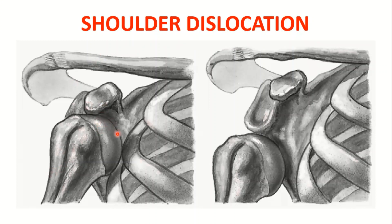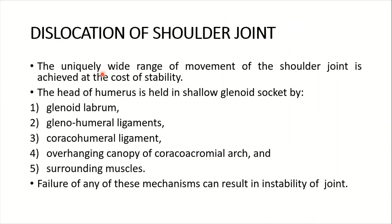Here you can see the shoulder joint in a dislocated position — this is the glenoid fossa or glenoid cavity, and this is the dislocated head of the humerus going inferiorly. The uniquely wide range of movement of the shoulder joint is achieved at the cost of stability. The head of the humerus is held in the shallow glenoid socket by the glenoid labrum, glenohumeral ligaments, coracohumeral ligament, the overhanging canopy of the coracoacromial arch, and surrounding muscles. Failure of any of these mechanisms can result in instability of the joint.